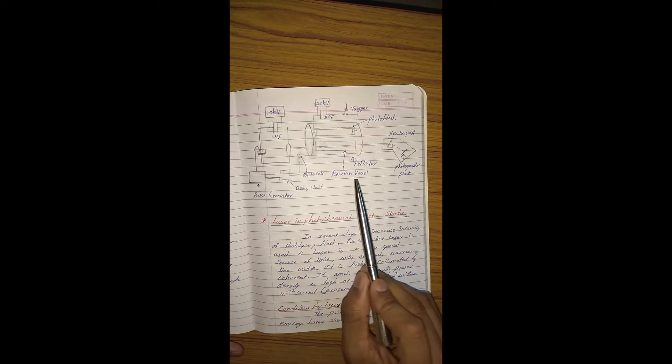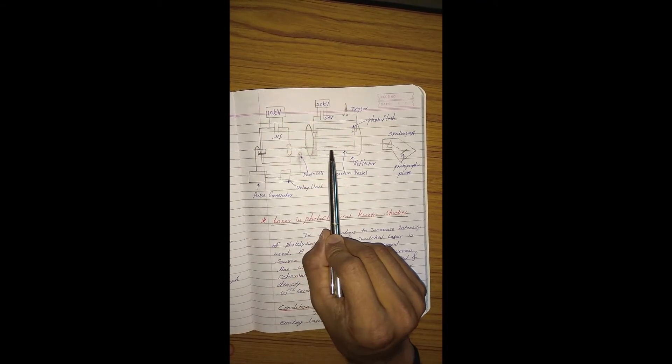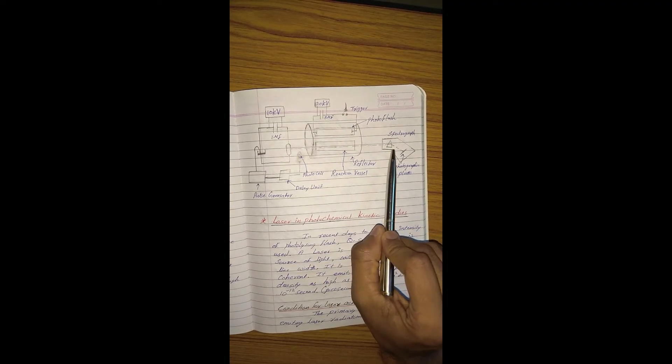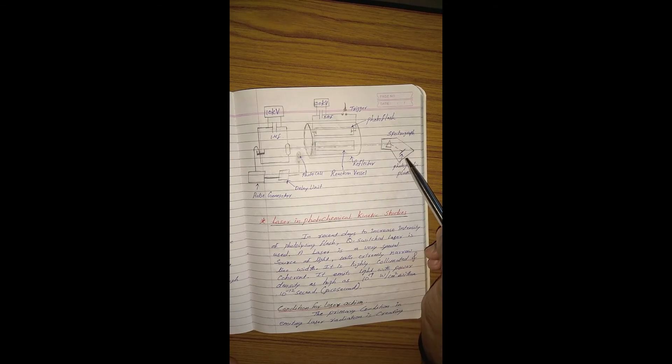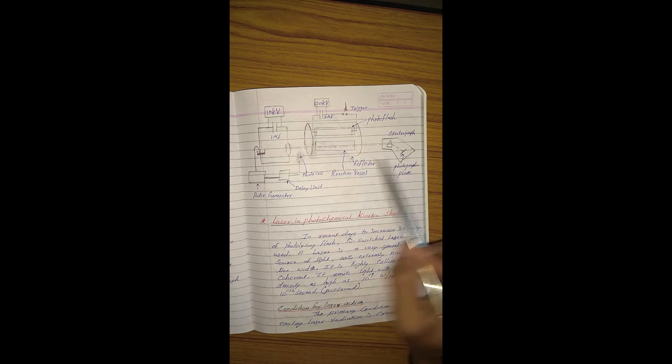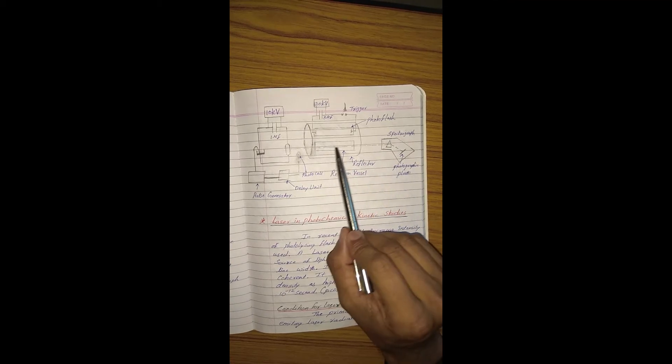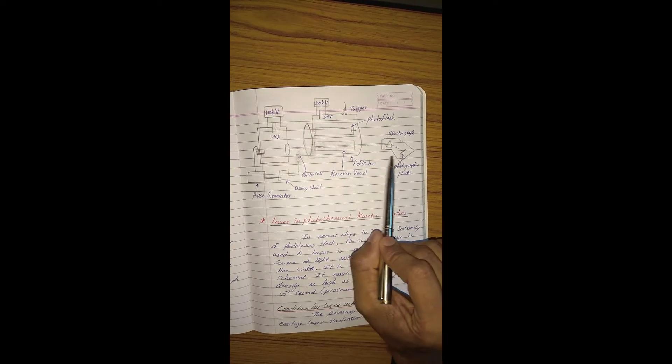The light from the monitoring flash is passed through the reaction cell and then through a spectrograph to obtain the absorption spectra. This gives the concentration of intermediates formed, and using this we can learn the quantity of intermediate formed during this process. This method is called flash photolysis.